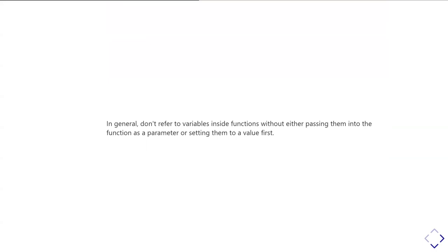The exception to that rule is things which are genuinely constants — things like the speed of light or the charge on an electron — where it would be a mistake to try and change them. If you've called the speed of light c and inside a function you suddenly try to do 'c = 23', you're probably going to hit an unbound local error, which is appropriate. So the bottom line is: if you really need to use a variable inside a function, pass it in as a parameter.